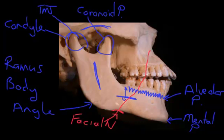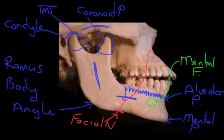The last little feature that's very important when you start giving local anaesthetic is this little foramen just here, and that foramen is called the mental foramen. That is where the mental nerve exits from the bone — it's a branch of a large nerve that runs through the mandible deep inside. A piece comes out to supply the skin, the lip, and all of this area, called the mental nerve.